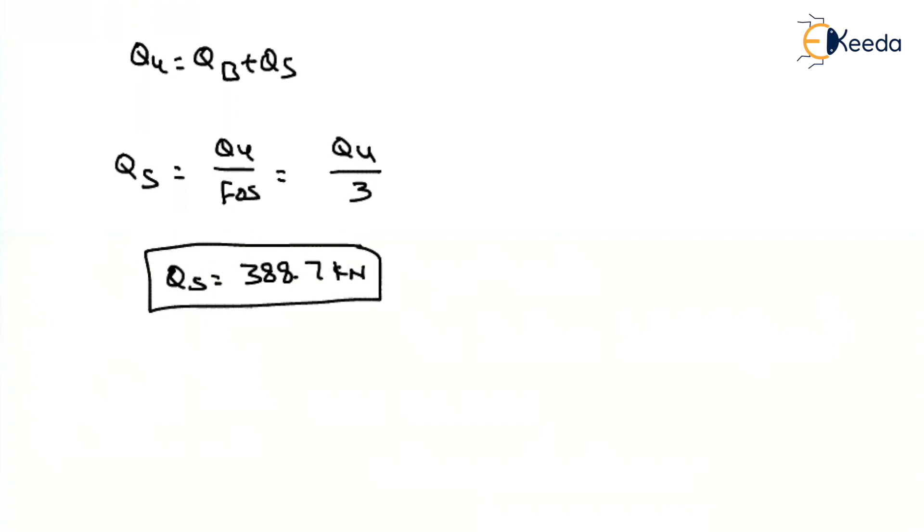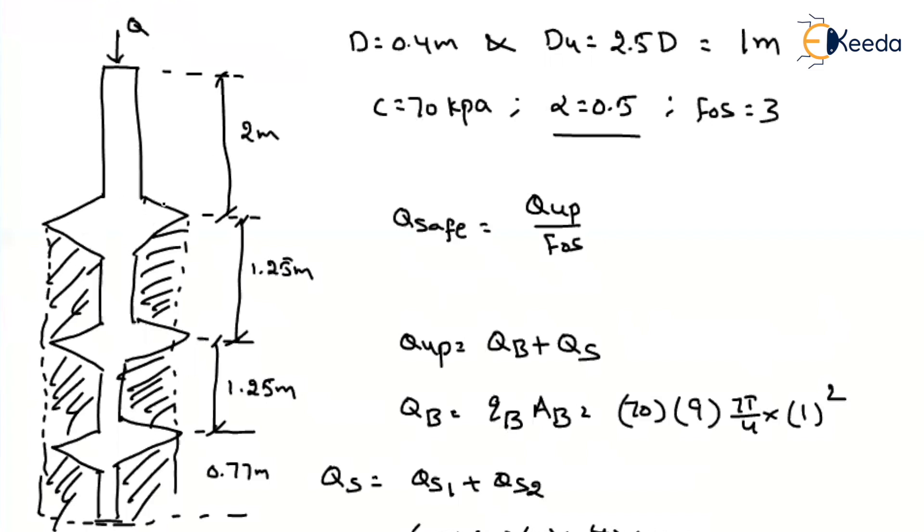So as I have described in the theory, before the enlarged part, we have to consider the soil below the enlarged part will behave like a pile. So up to the enlarged part, we have to consider it as a pile diameter.